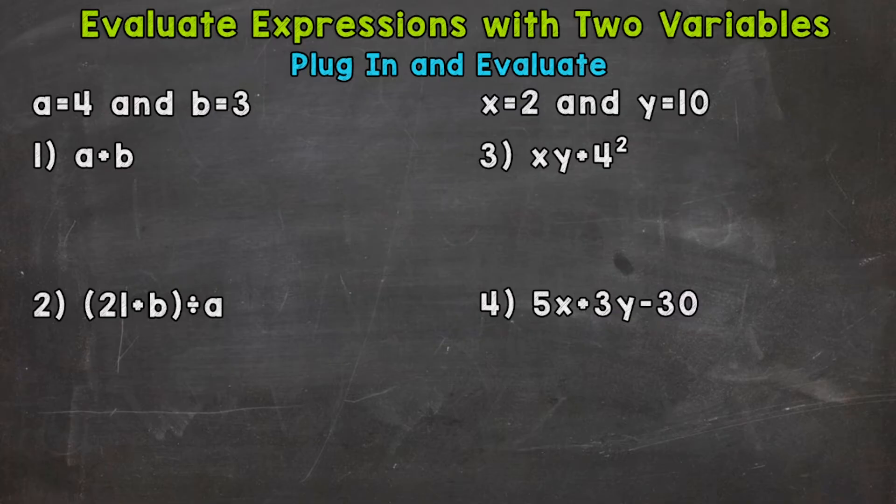For numbers 1 and 2, we have a and b. a equals 4 and b equals 3. For numbers 3 and 4, we have x and y. x equals 2 and y equals 10.